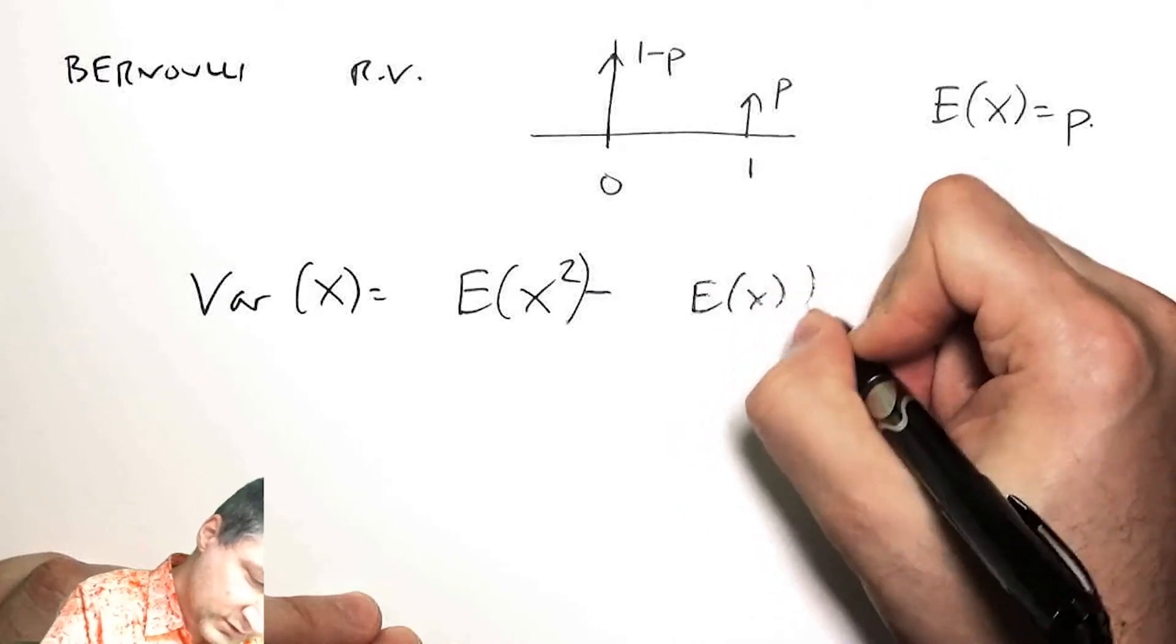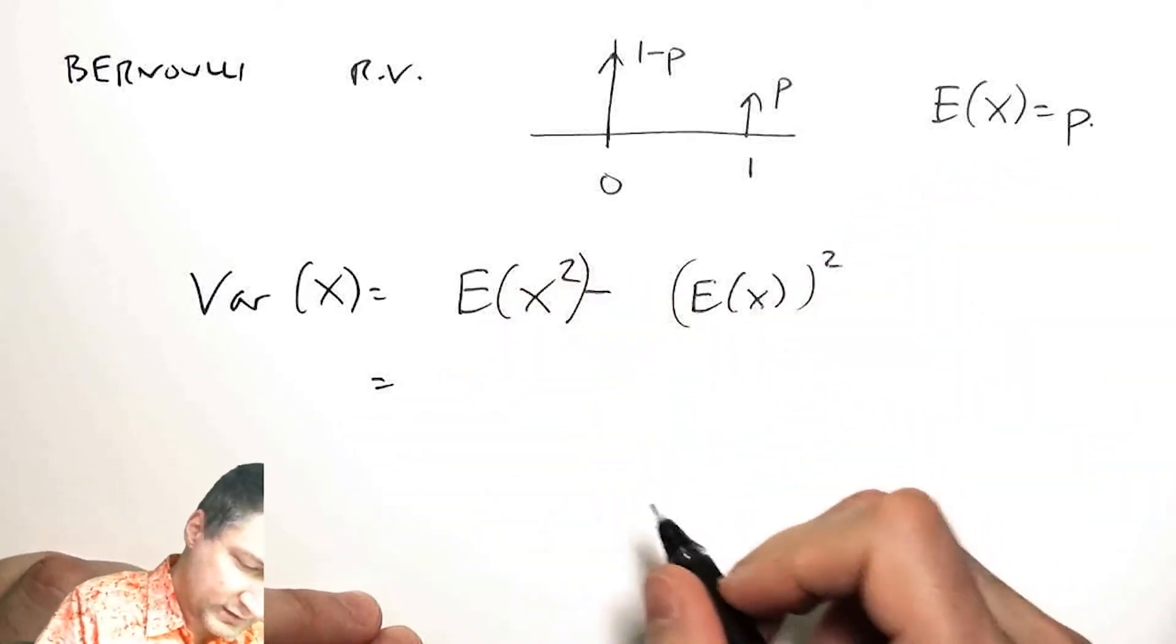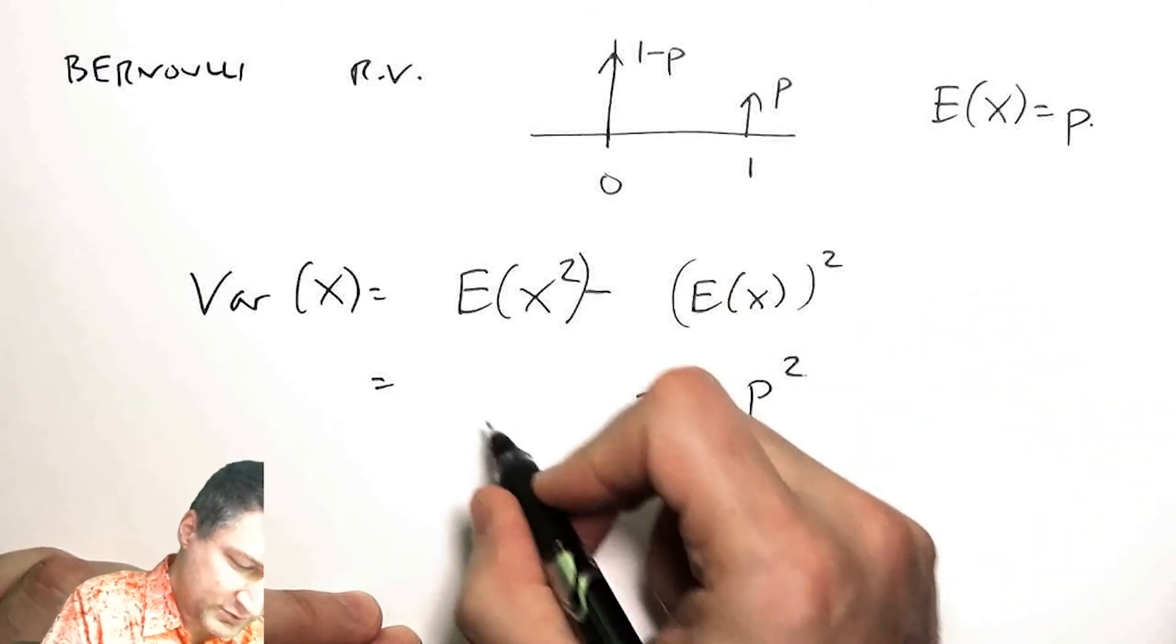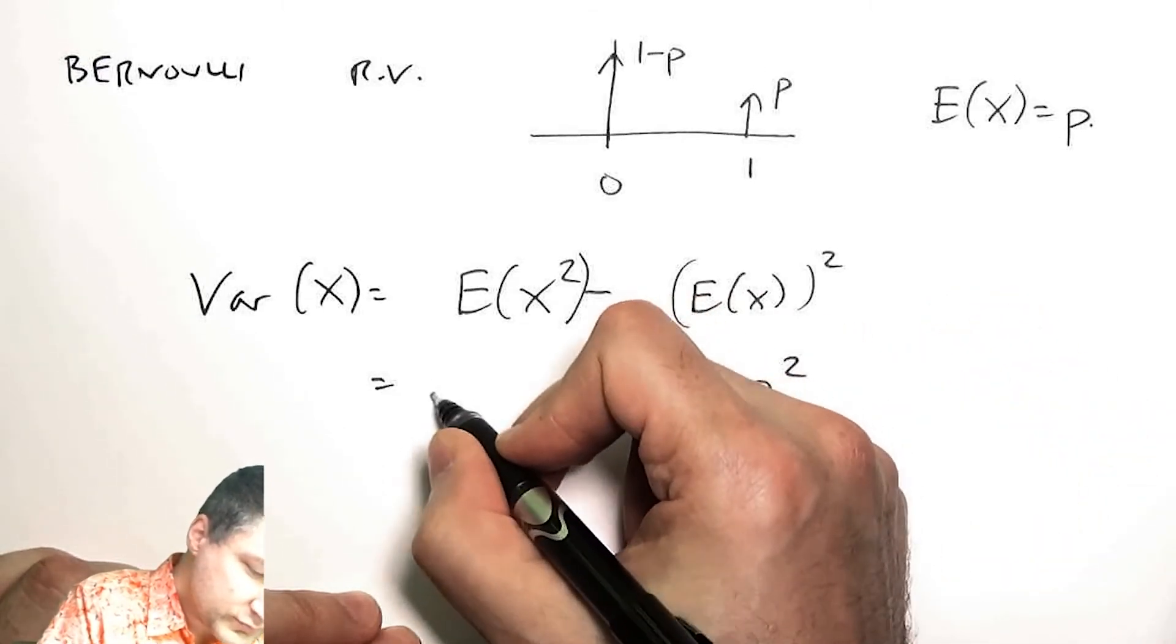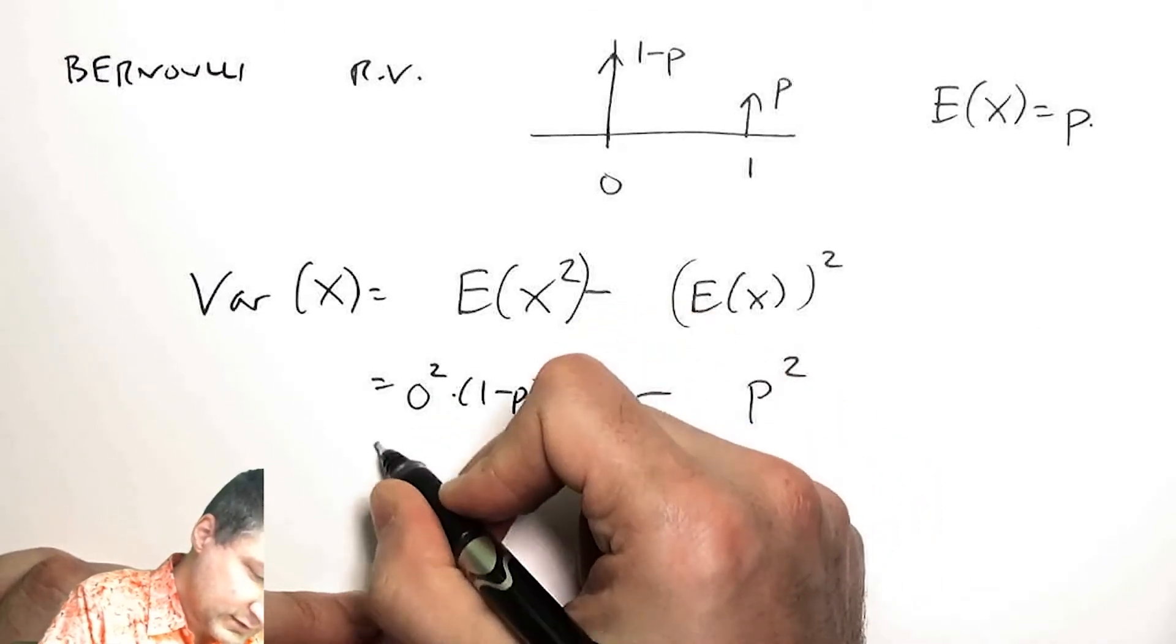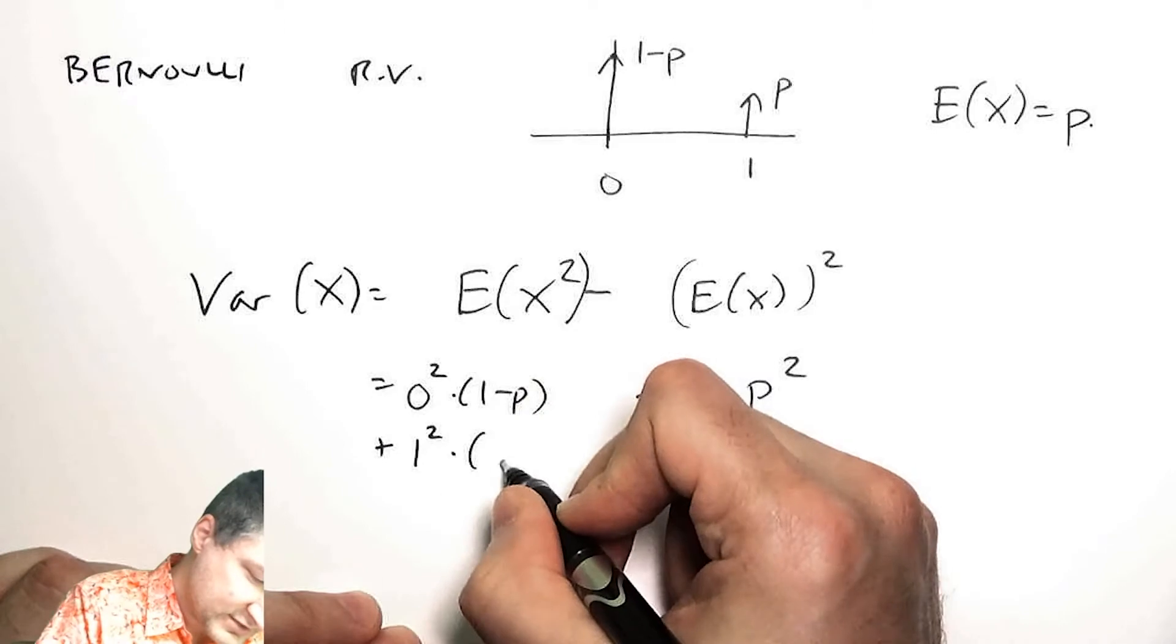I could say, what's the expected value of X squared minus the expected value of X all squared? This I know is p squared. This I have to compute.